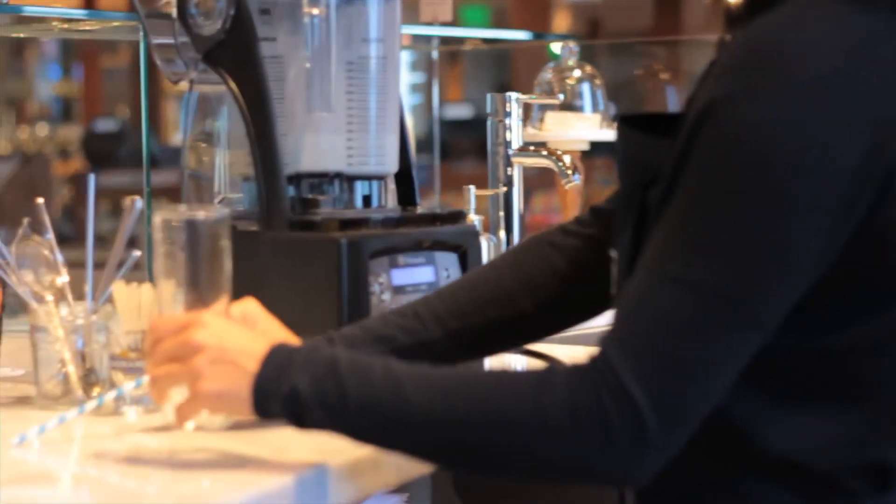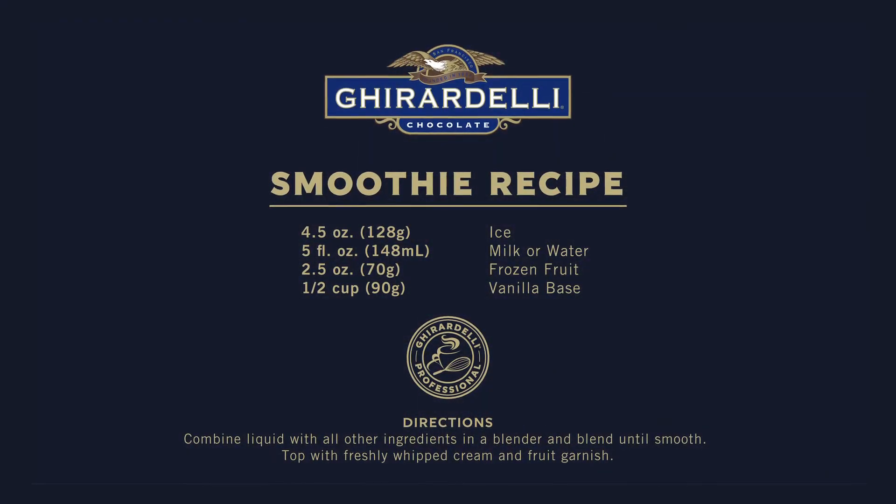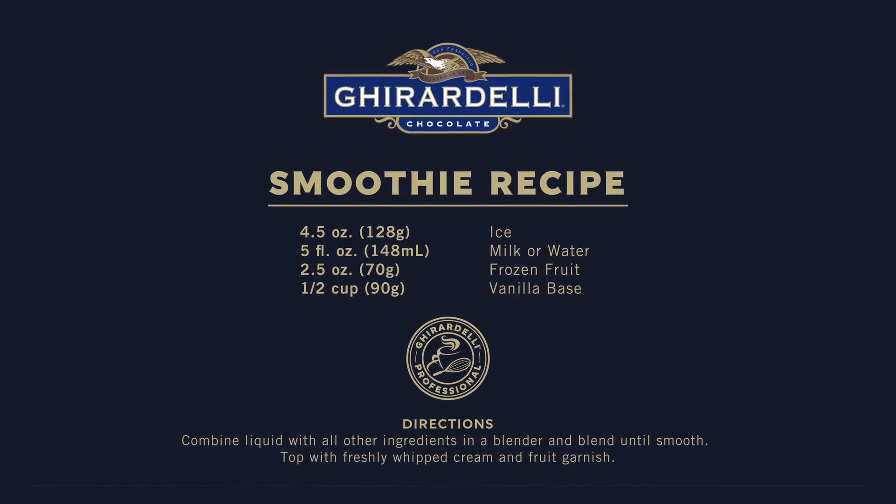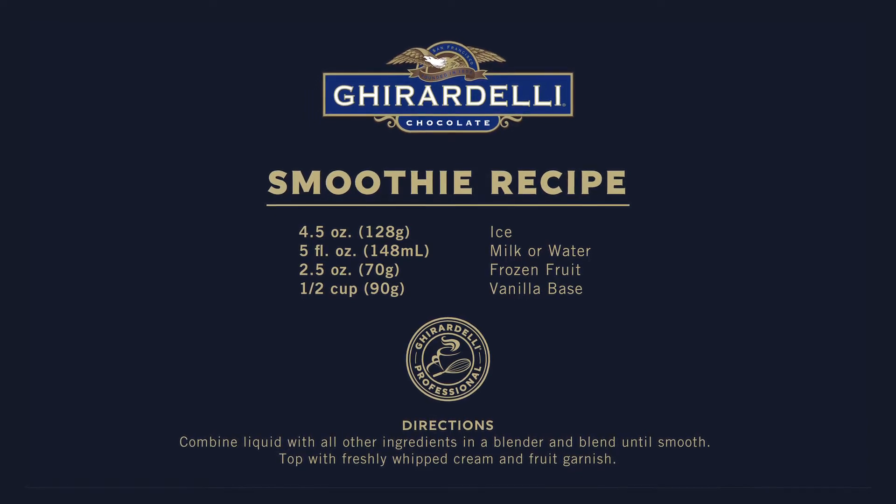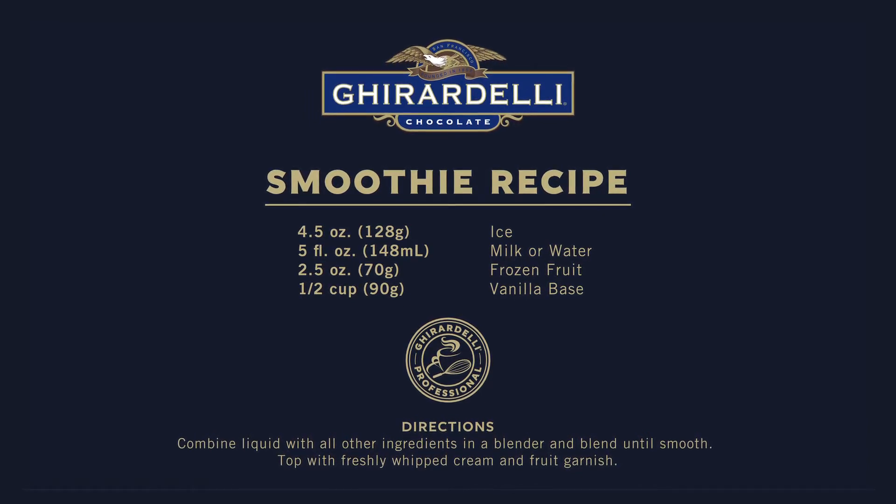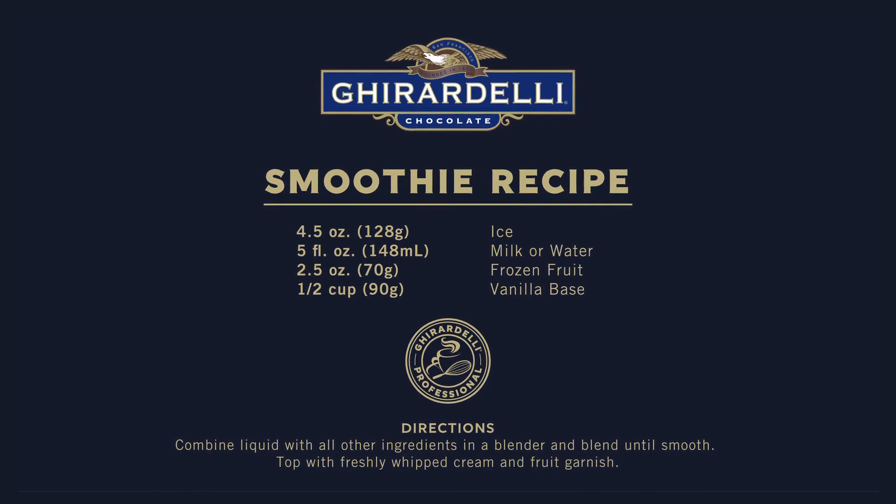To create the perfect smoothie you will need four and a half ounces of ice, five fluid ounces of milk or water, two and a half ounces of your choice of fresh or frozen fruit, and half a cup of vanilla base.